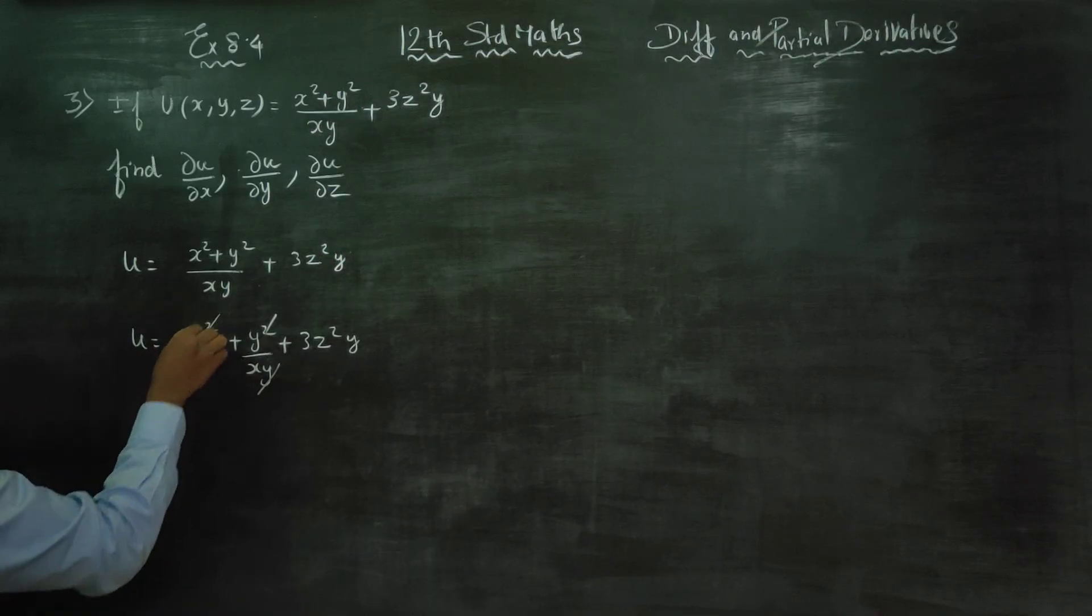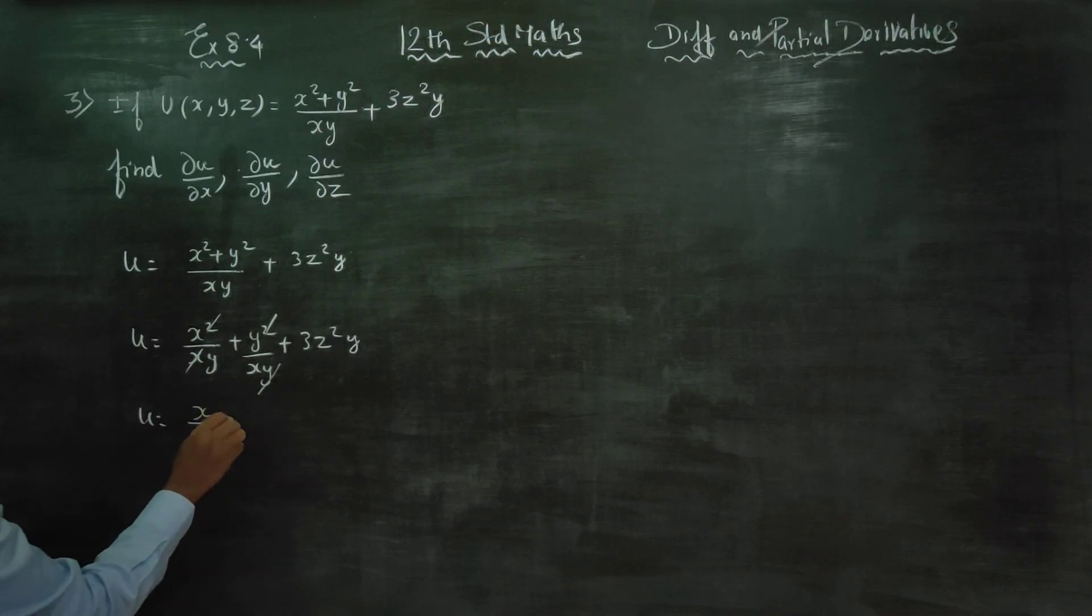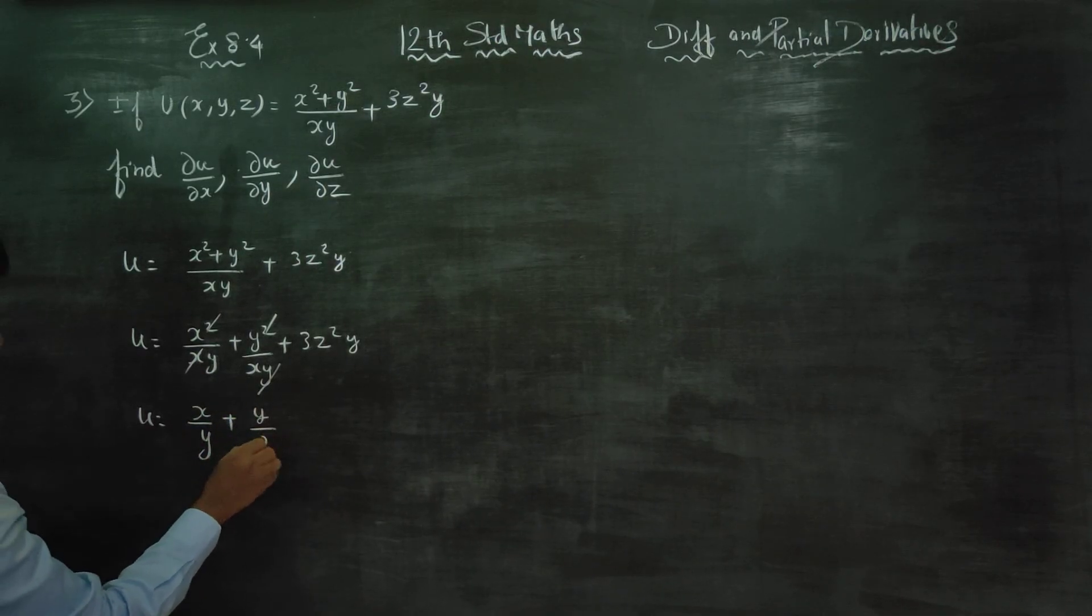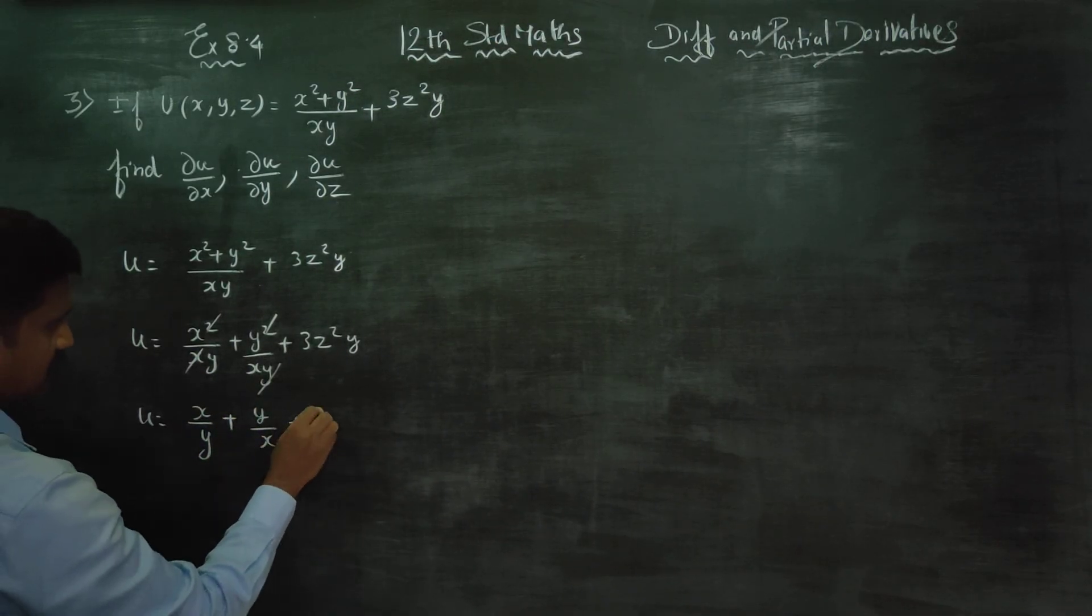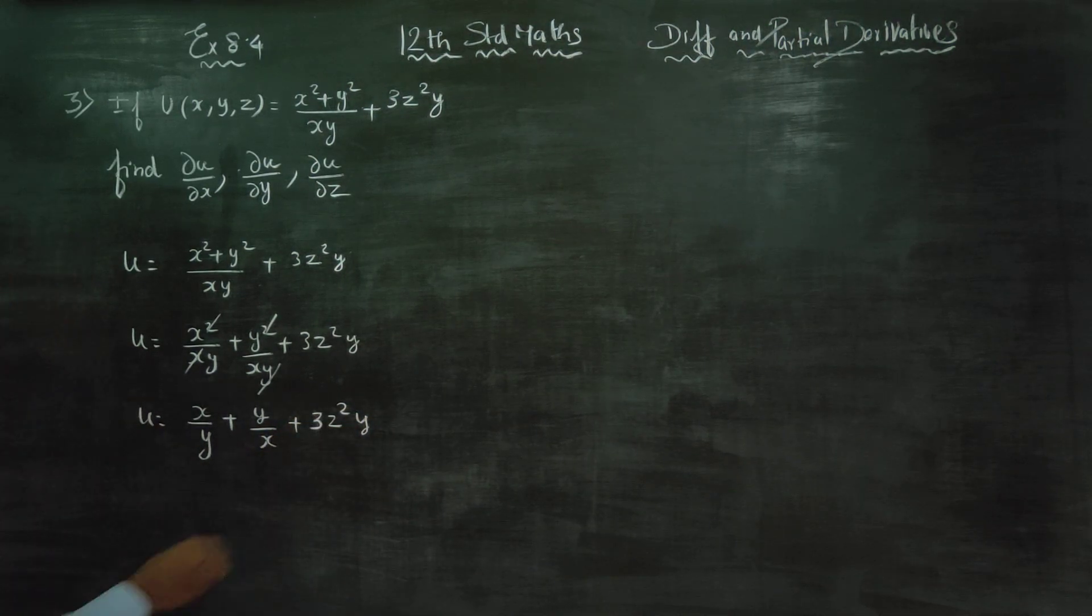I will be getting x by y plus y by x plus 3z square y. Fine, first we will start with ∂u/∂x.